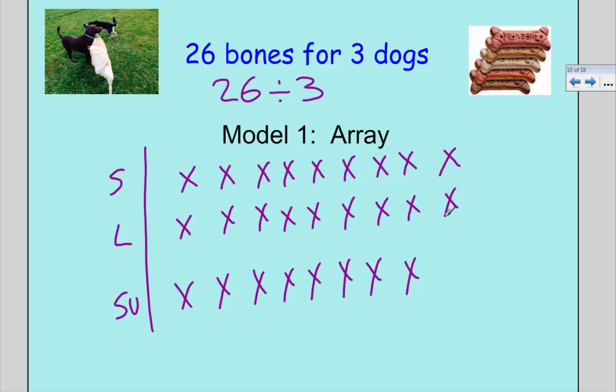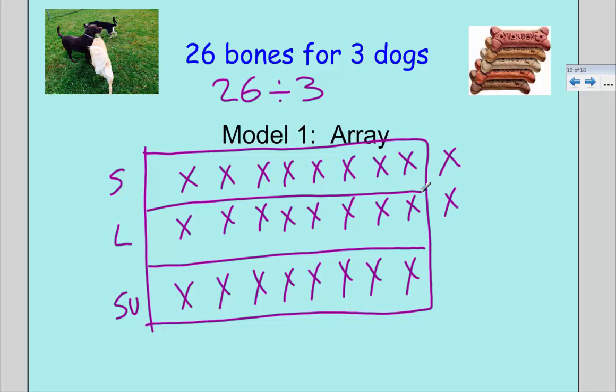So this is what a remainder is. What we've done is made an array to show how many bones each dog can get. When I go back through and count, one, two, three, four, five, six, seven, and eight. It looks like each dog gets eight bones.